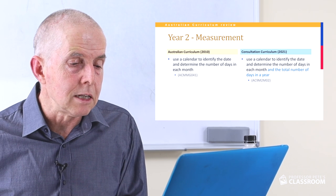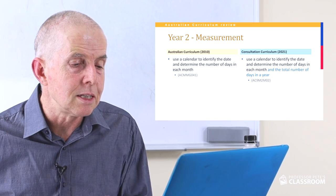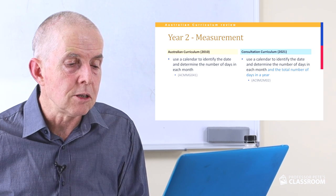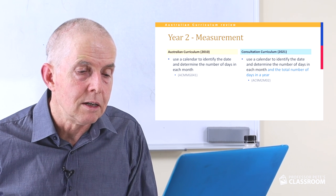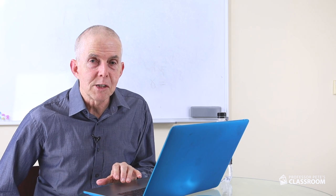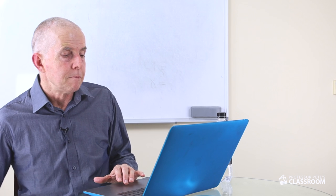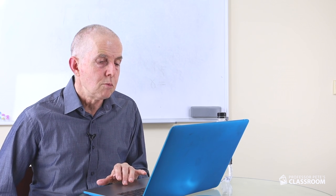Measurement descriptor two: use a calendar to identify the date and determine the number of days in each month — same as the old curriculum — and now also the total number of days in a year. I think this is badly written; who would use a calendar to count all the days in a year? It's cumbersome. I also think knowing there are 365 or 366 days in a leap year is a little advanced for year two and would be better placed in year three.